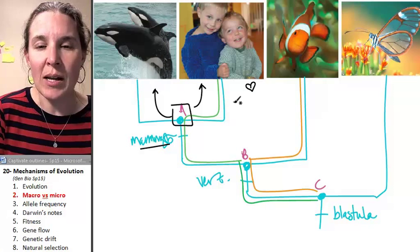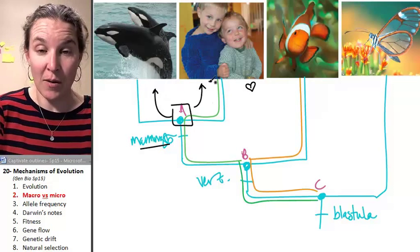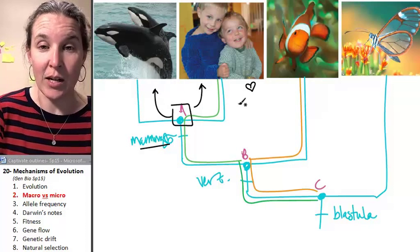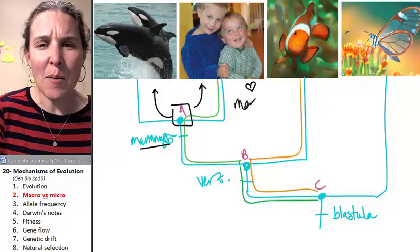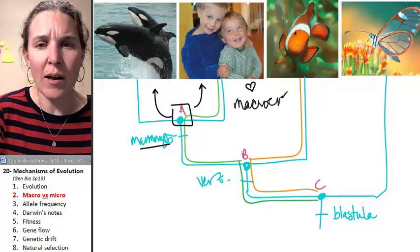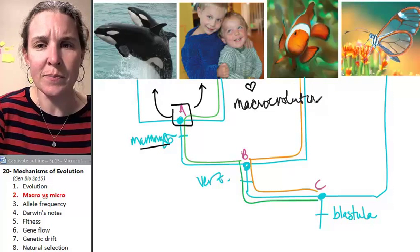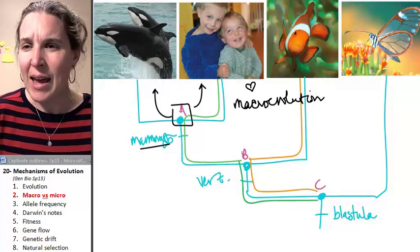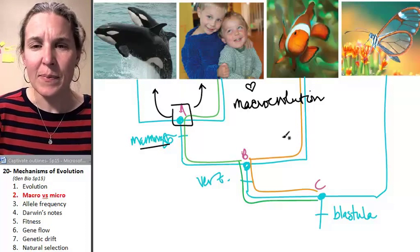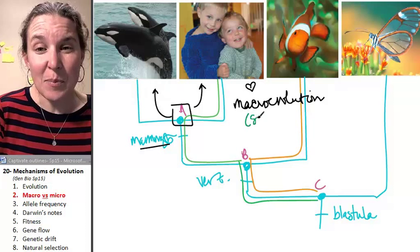So I'm going to write it in black so that you know that I'm talking about these black lines right here. But it's an example of macroevolution and really it's speciation.